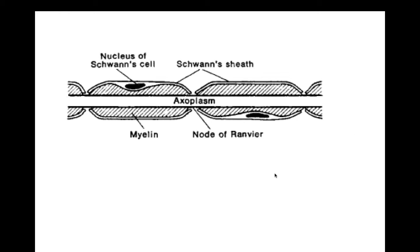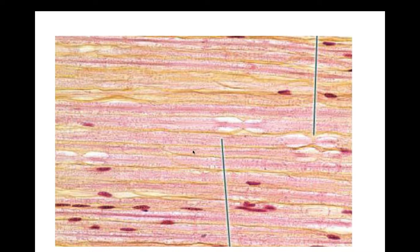Since we are in the PNS, who does the myelination? Schwann cells. Here's showing you the nucleus of one Schwann cell — remember one Schwann cell can only myelinate one section of one axon. Here is the Schwann cell, here is the myelin sheath (also called the Schwann's sheath). Where the two Schwann cells come together there's going to be a little gap — that is your node of Ranvier. Your axon or nerve fiber flows through here.